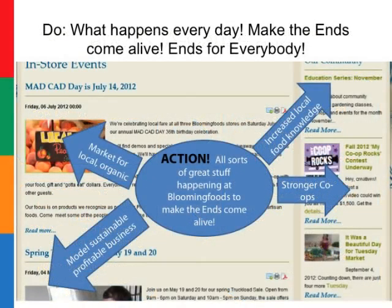When we're talking about Do, this is what happens every day — it's making ends come alive, really the critical component for everybody. Take a look at a screenshot from the Blooming Foods webpage. All sorts of amazing stuff is going on at Blooming Foods to make the ends come alive: local and education — both being market for local and organic and increased local food knowledge — are ends the board of directors has decided upon. Another end is a model, sustainable, profitable business. And finally, more strength in our co-op system. You can see just from this one screenshot that the ends are really coming alive at Blooming Foods.